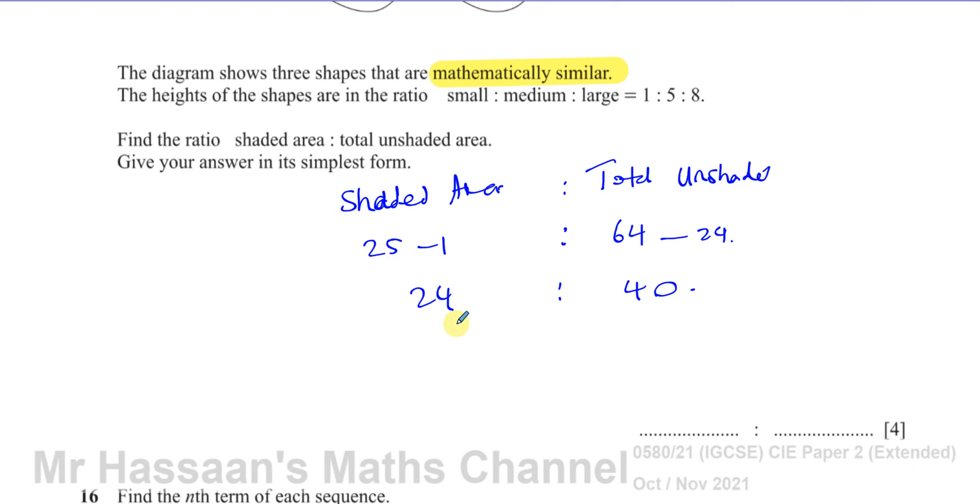Well, I think what goes into both of these? 6 goes into both of these. If you divide by 6, in fact, even 8 goes into both of these. That's probably easier. 8 will go into both of these. 24 divided by 8 is 3. 40 divided by 8 is 5. So the ratio is 3 to 5.